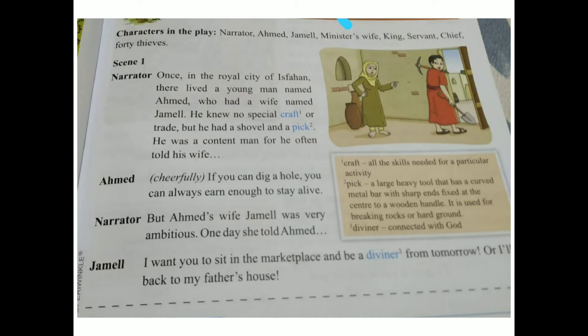Scene 1. Narrator: Once in the royal city of Isfahan, there lived a young man named Ahmed, who had a wife named Jamil. He knew no special craft or trade but he had a shovel and a pick. He was a content man, for he often told his wife: 'If you can dig a hole, you can always earn enough to stay alive.'